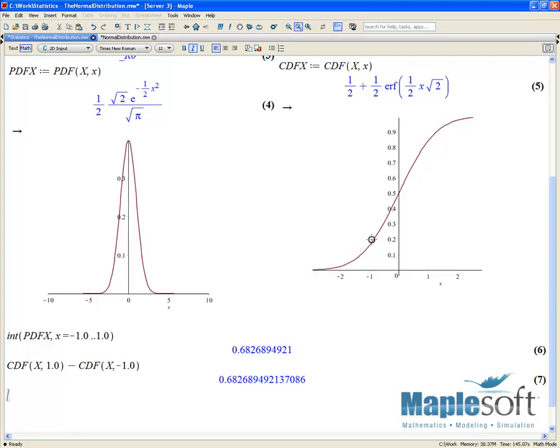Because what we're doing is we're just adding up the area between this here and this here. So we're just adding up basically the values from here to here. And this will return that same 68%.